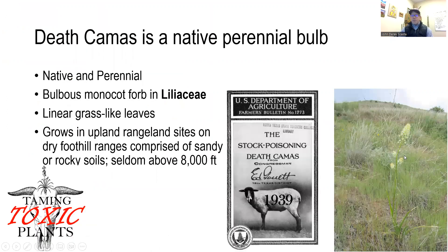Death camas is a native and perennial bulbous plant. It's in the Liliaceae family, and as you can see in this picture on the right of your screen, it has linear and grass-like leaves and has often been confused with the wild onion. It's also a plant that has been recognized for many decades as a poisonous plant to livestock. You can see this USDA bulletin here that dates back to 1939, so this is a problem we've known about for a long time.